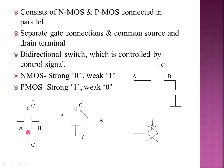In the pass transistor, the control signal goes to the NMOS gate. The control signal controls whether the signal passes through. Now, the signal is passed into the connected network. We have already connected the inverter and the gate in PMOS.